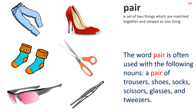Pair — a set of two things which are matched together and viewed as one thing. The word 'pair' is often used with the following nouns: a pair of trousers, shoes, socks, scissors, glasses and tweezers.